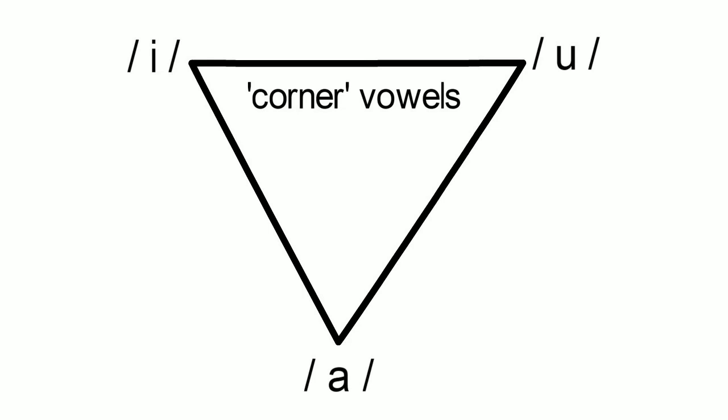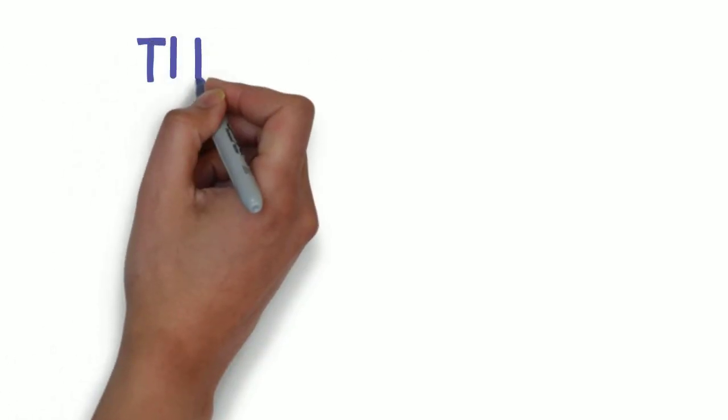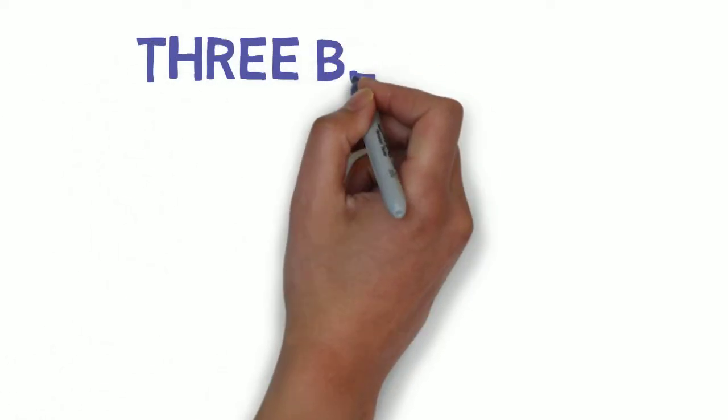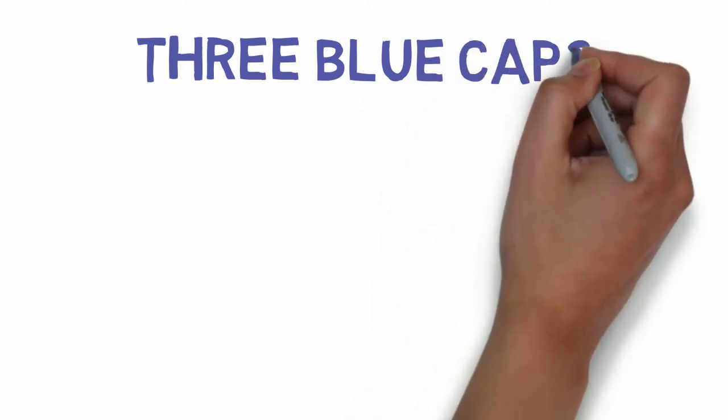Researchers measure vowel space to see how much speakers are separating vowels in pronunciation. We can show this in the pronunciation of the phrase three blue caps, which uses each of the corner vowels.